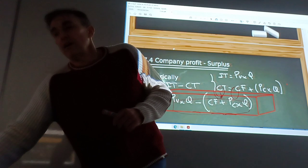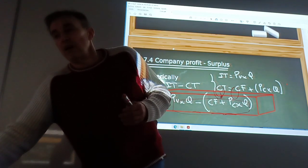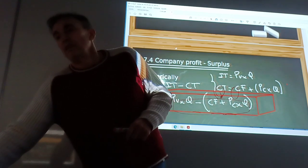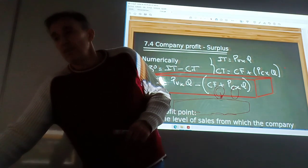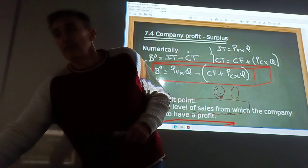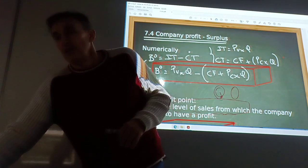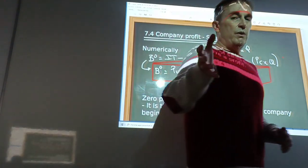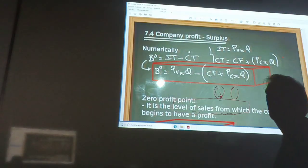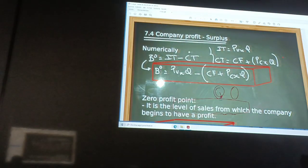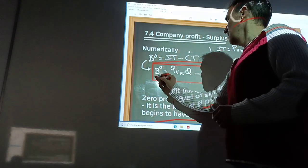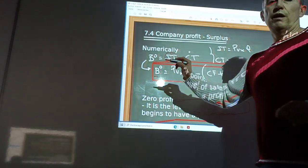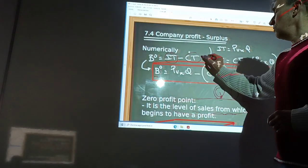We will speak about the company profit or surplus. It is the total income or total revenue. It is the situation of the variable possibilities between income and cost.